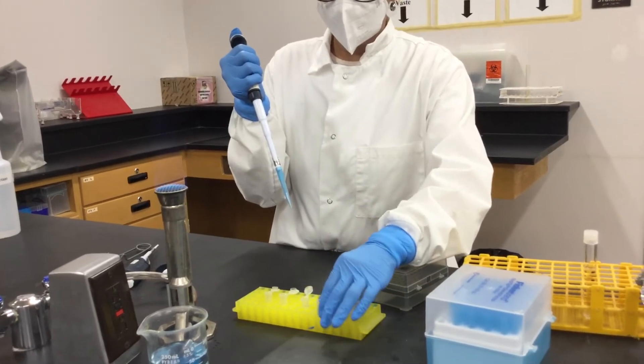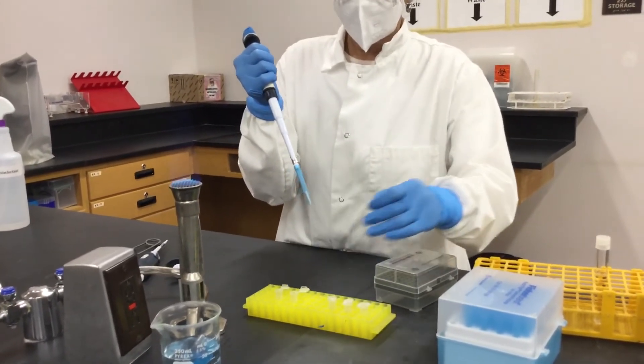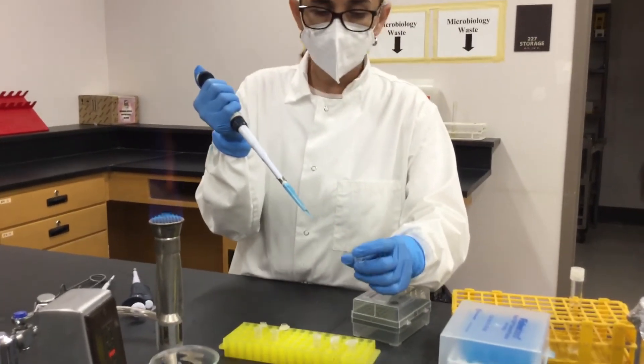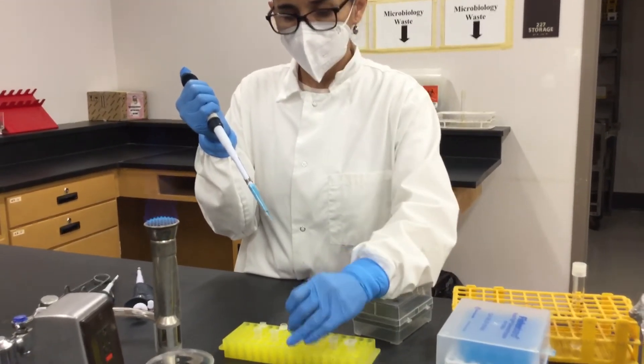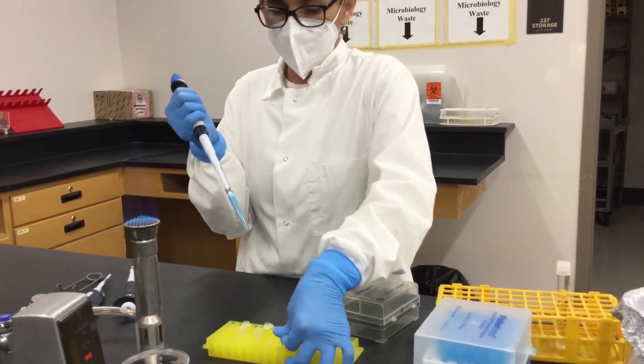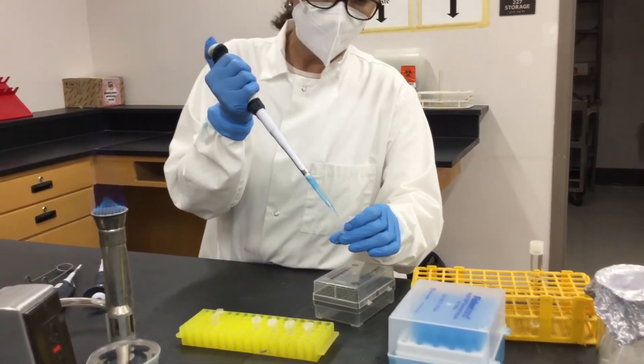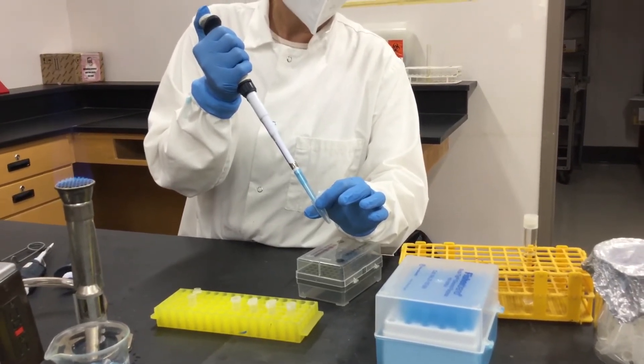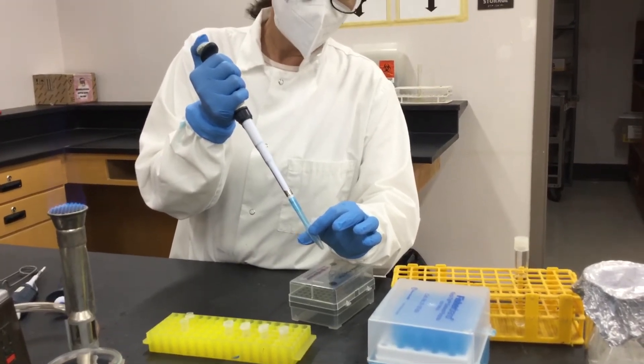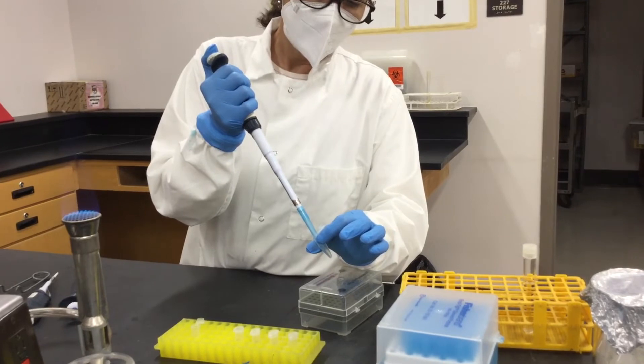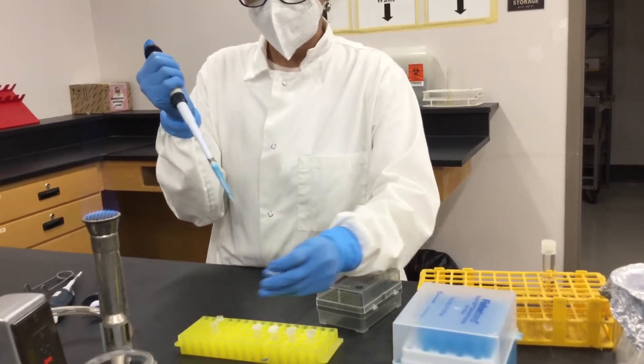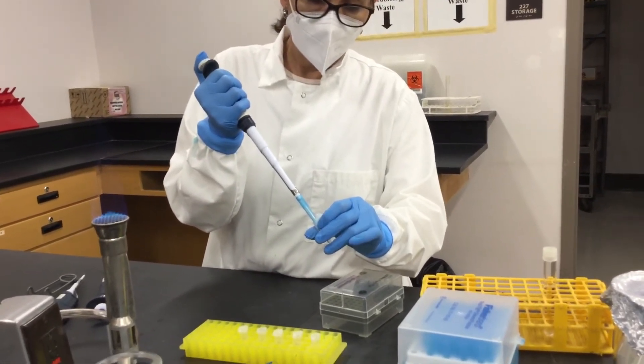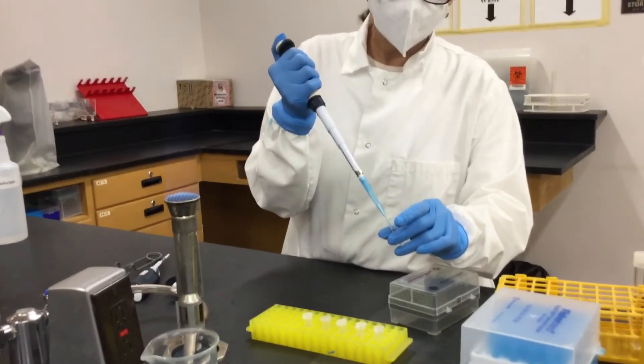And then close this. You can change the tip, but in this case we are going to use the same. Grab 100 microliters of this, close it, and then add it into your next tube which is having 900 microliters of sterile water. Mix it really well, punching up and down, and then grab 100 microliters, close it, add it into here, and then you end up in the 10 to the minus 7 dilution.